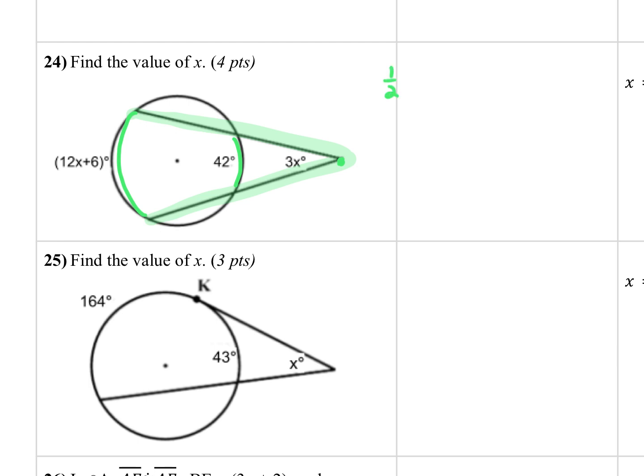So we want one half of the difference of 12x plus 6 minus 42 is equal to 3x. So then I've got some algebra to do. I would not like to take half of all of those things. So instead, I'm going to multiply by 2 on both sides to get rid of that one half. So that leaves me with 12x minus 36 is equal to 6x. Subtract 12x and I get negative 36 equals negative 6x. So that means that 6 is equal to x. It asks for the value of x. So I am done with that problem.